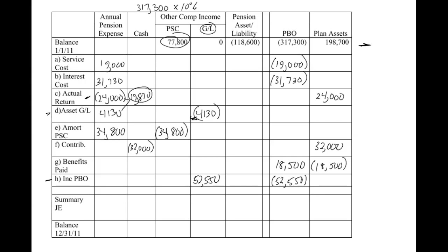This is now getting to be a more complete worksheet — we have all the columns at the top. As I've said, everything goes in the same box. The only thing that can change signs are things that can be gains or losses. Use that to your advantage — as you do more and more of these, it should become easier to start putting things in the correct spot.